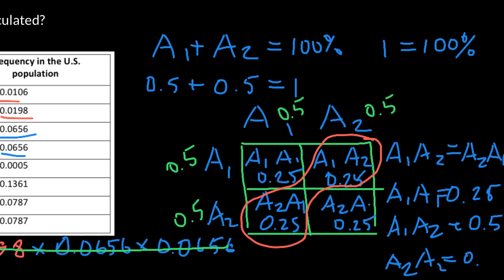Genotype A2A2 would equal 0.25. If we combine all these numbers: probability of homozygous genotype A1A1 is 25%, probability of heterozygous genotype A1A2 is 50%, and probability of homozygous genotype A2A2 is also 25%. Adding all these numbers gives us 1 or 100%.